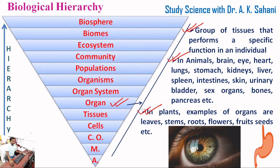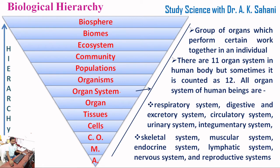The next level is organ system. A group of organs which perform certain work together in an individual is known as an organ system.